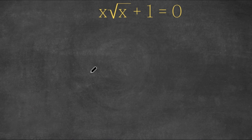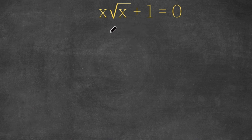Hey guys, welcome back to Click Academics. In today's video, I'm going to be teaching you guys how to solve this problem. So we have x times the square root of x plus one is equal to zero.